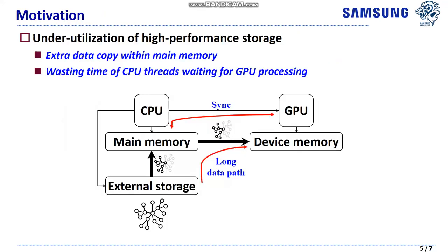Via a preliminary analysis, we observed that RealGraph GPU has a good chance for more performance improvement in IOs between storage and GPU device memory. First, the IOs between main memory and device memory require extra data copy within main memory, which occupies 60% of the total time for IOs between main memory and device memory.